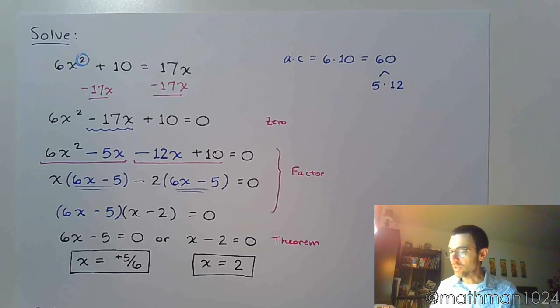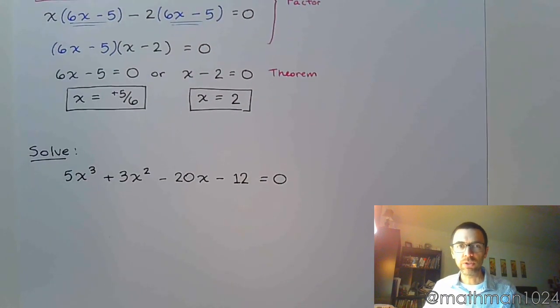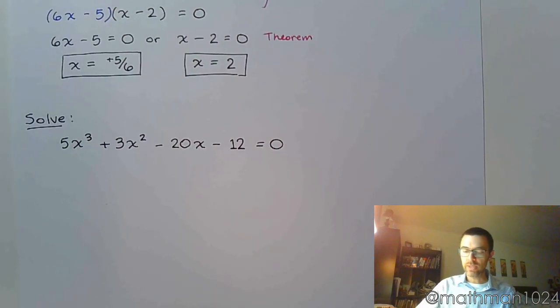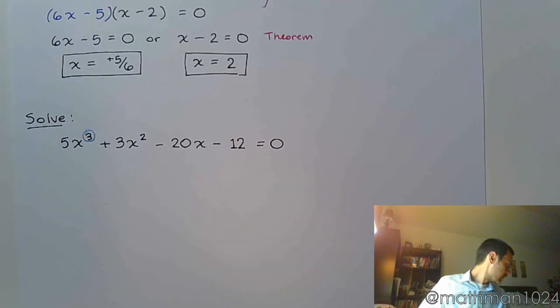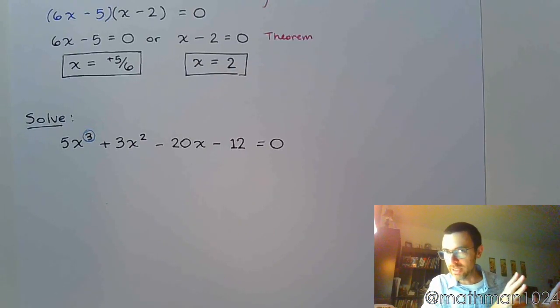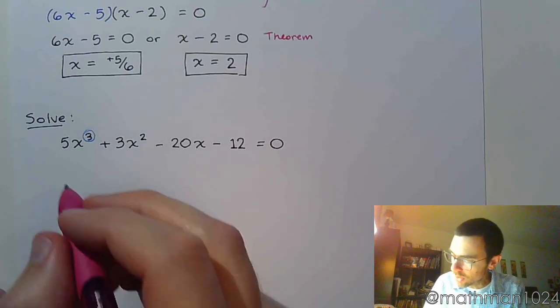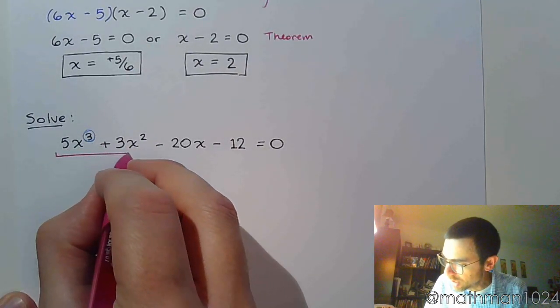All right, now the next example is a polynomial that has four terms. Not only that, but you notice here that the highest power is three, so this is a polynomial of degree three. That means we're expected to have three solutions at the end. Well, typically when we have four terms, at least right now in this semester, when you have four terms there's this expectation that we can factor by grouping. So let's do that just like we did in the previous problem.